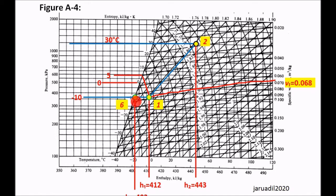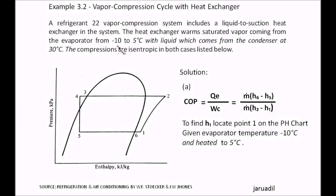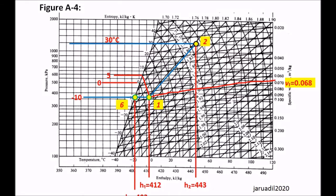Since the problem states it is superheated to 5 degrees Celsius — the heat exchanger warms saturated vapor from the evaporator from negative 10 to 5 degrees Celsius. So from negative 10 to 5 degrees Celsius. This is our negative 10 — it is superheated to 5 degrees.